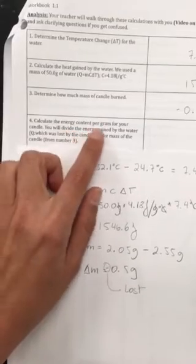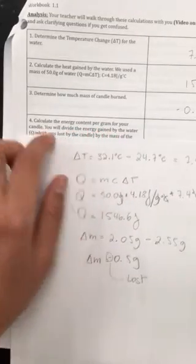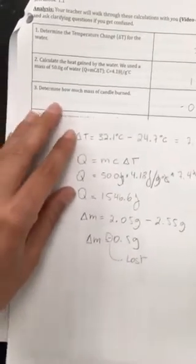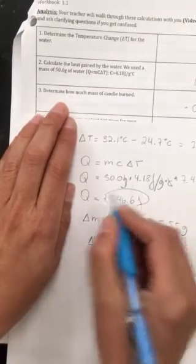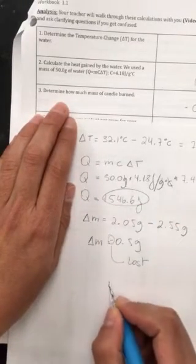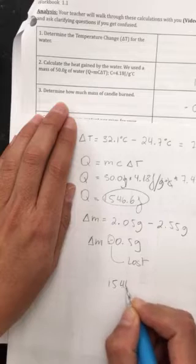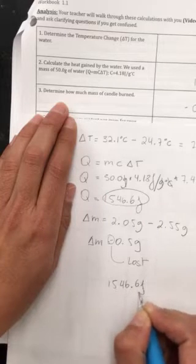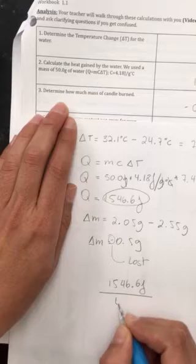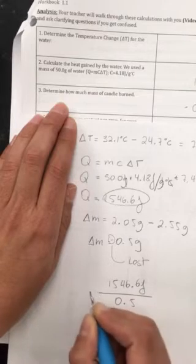Calculate the energy content per gram for your candle. So this next step all you need to do is take this number which is 1546.6 joules and divide it by the mass of the candle, and let's keep the negative.